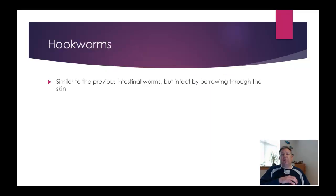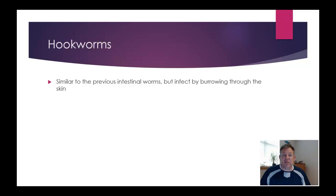Another type of nematode, very similar, is the hookworms. They have a very similar life cycle, but they infect by burrowing through the skin rather than by ingesting eggs. This structure shown here is not the hook part — it's something they use to hold onto the intestine. One end has a characteristic hook shape.